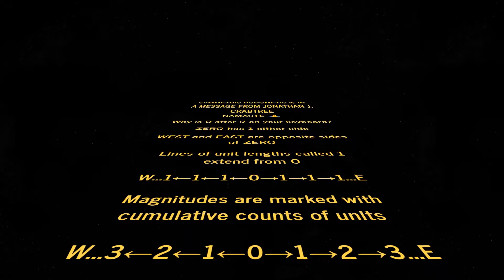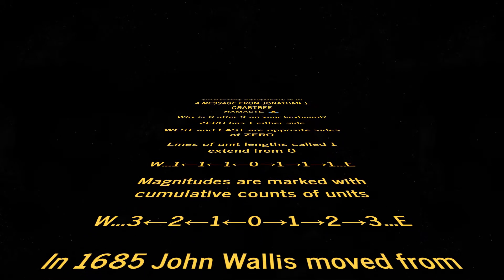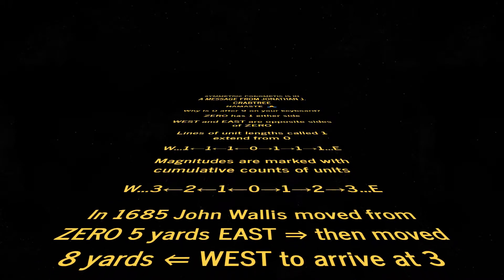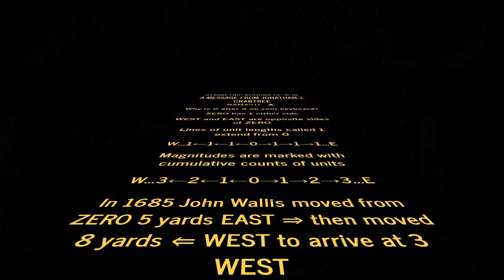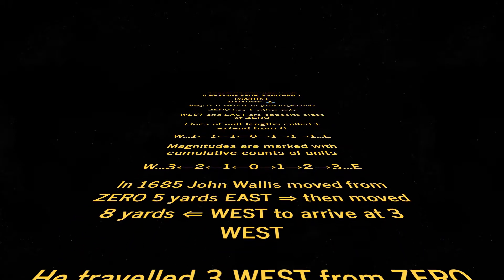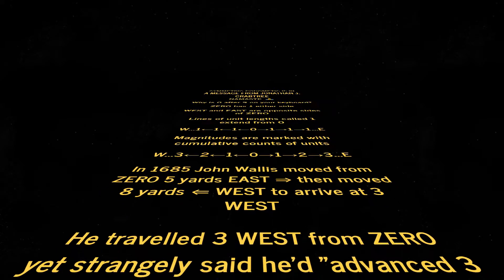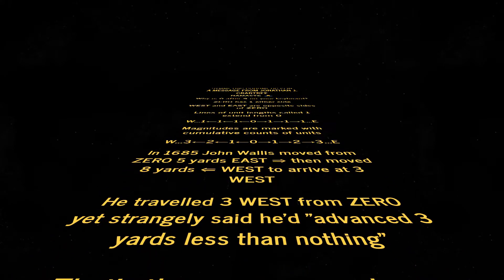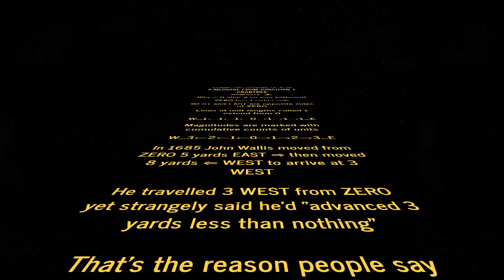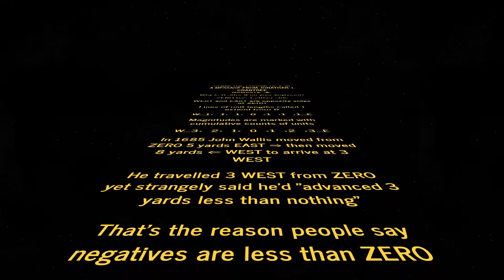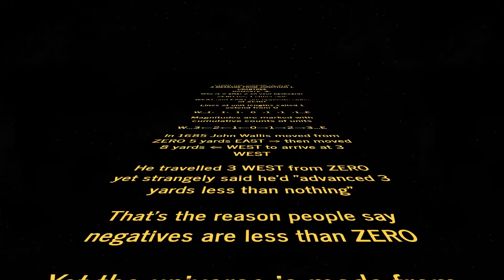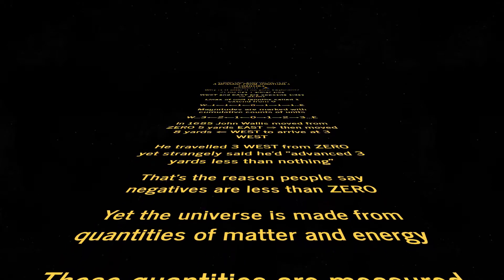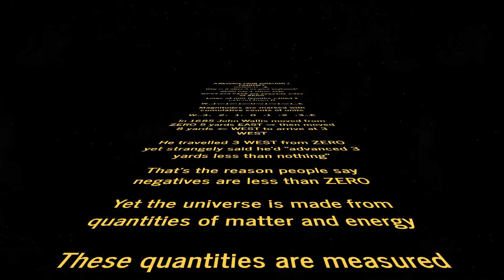Magnitudes are marked with cumulative counts of units. In 1685, John Wallis moved from zero five yards east, then moved eight yards west to arrive at three west. He travelled three west from zero, yet strangely said he'd advanced three yards less than nothing.